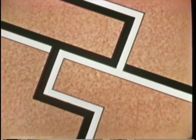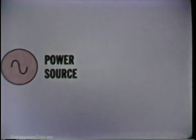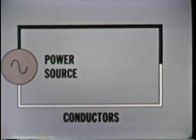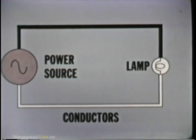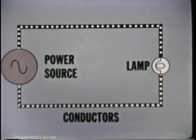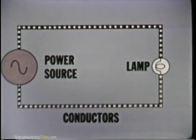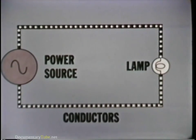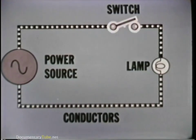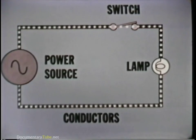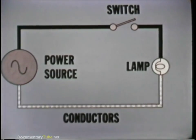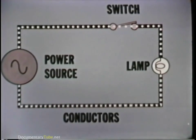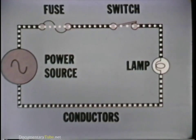An electric circuit is a path or a group of interconnected paths capable of carrying electric currents. An electric circuit exists when the source of power is attached through a pair of conductors to an electrical device, such as a lamp. Current flows from the power source through the conductors to the electrical device. To provide a measure of control, a switch is normally added to turn the circuit off and on. To protect the circuit from damage in the event of trouble, a fuse or circuit breaker is added to the circuit.